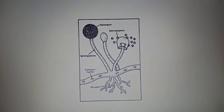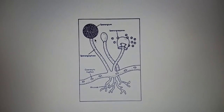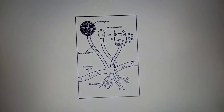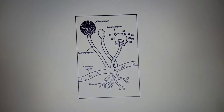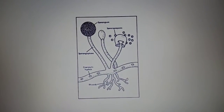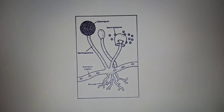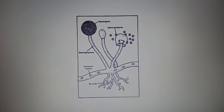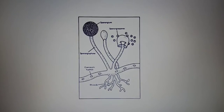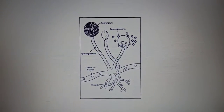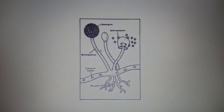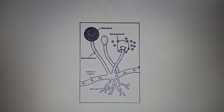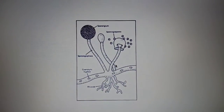If the fungus is undergoing asexual reproduction, asexual spores will be formed in the fruiting body. If it is undergoing sexual reproduction, sexual spores will be formed. The type of spore depends on the mode of reproduction. This is the basic structure of a particular fungus.